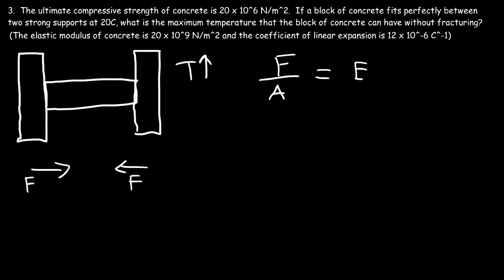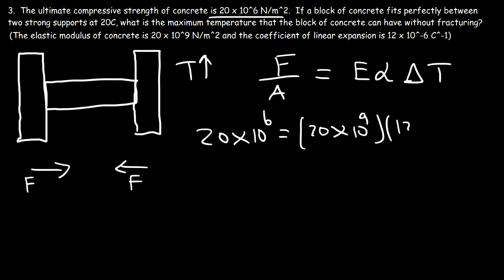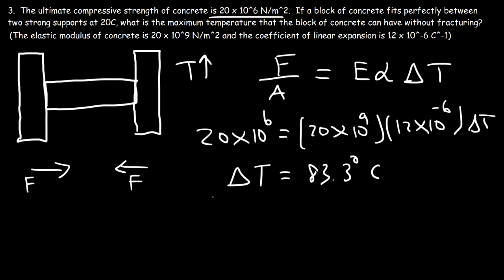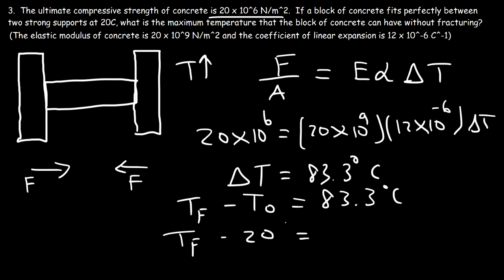We replace F over A with the ultimate compressive strength: 20 times 10 to the 6. The elastic modulus of concrete is 20 times 10 to the 9, and alpha is 12 times 10 to the minus 6. Solving for delta T: 20×10⁶ divided by (20×10⁹ times 12×10⁻⁶) equals 1×10⁻³ divided by 12×10⁻⁶, giving a change in temperature of 83.3 degrees Celsius. Adding this to the initial temperature of 20 degrees, the maximum temperature is 103.3 degrees Celsius.